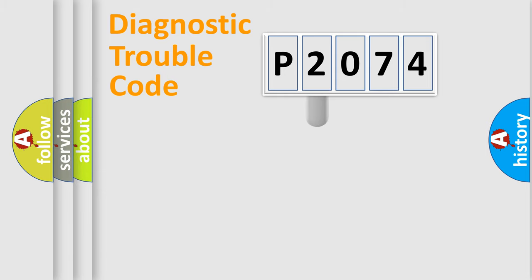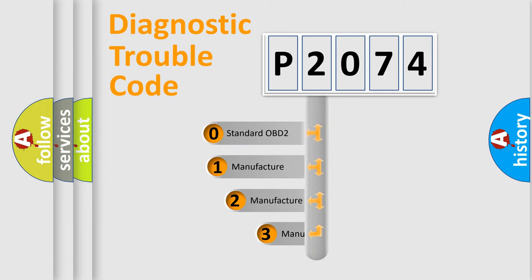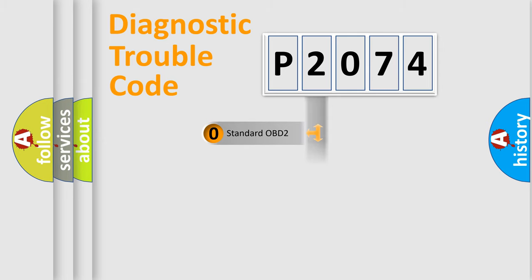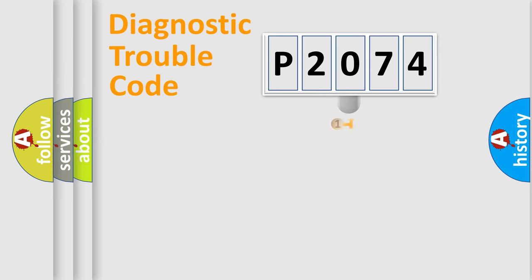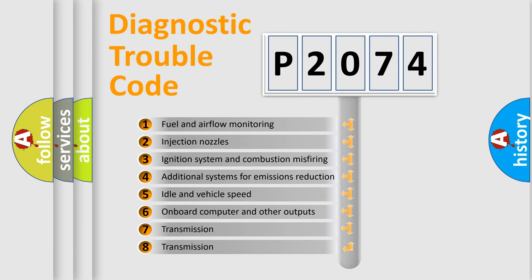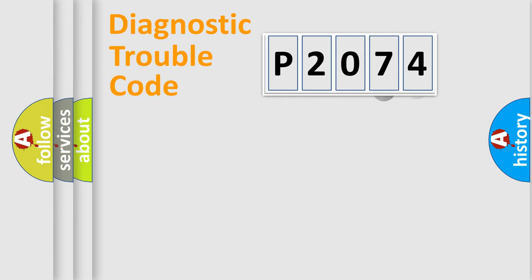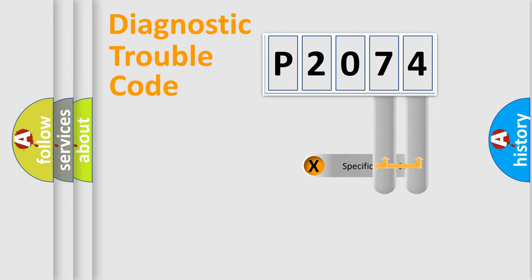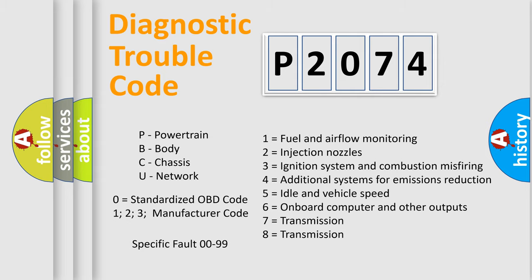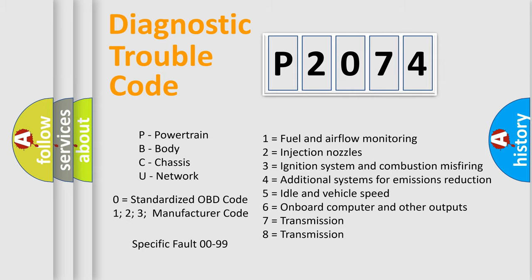This distribution is defined in the first character of the code. If the second character is expressed as zero, it is a standardized error. In the case of numbers 1, 2, or 3, it is a manufacturer-specific error. The third character specifies a subset of errors, and only the last two characters define the specific fault of the group.